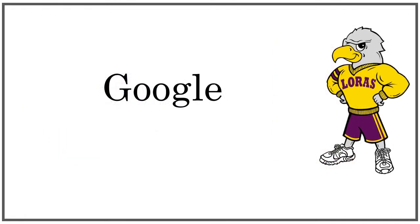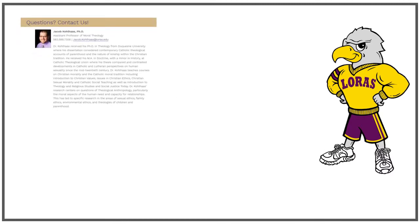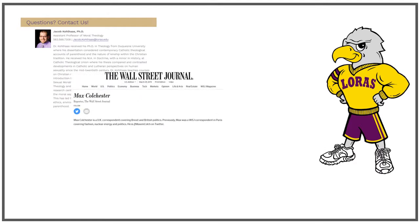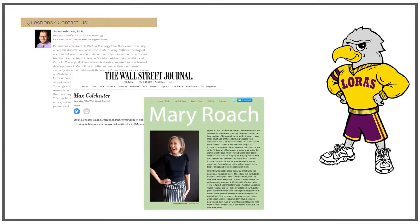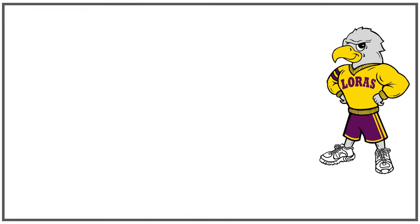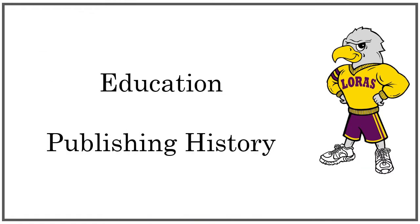When you have gleaned all the information you can from a database or website, Google will help you find the answers to the remaining questions. College websites usually have a short biography of their professors that lists their education and areas of study, and may provide a link to a resume which will detail their publishing history. Staff writers for magazines and newspapers may also have a bio page. Other authors may have a personal website with their education and publishing history. Typically, authors with more education and a longer publishing history are more reliable than those who have not been writing or researching for as long.